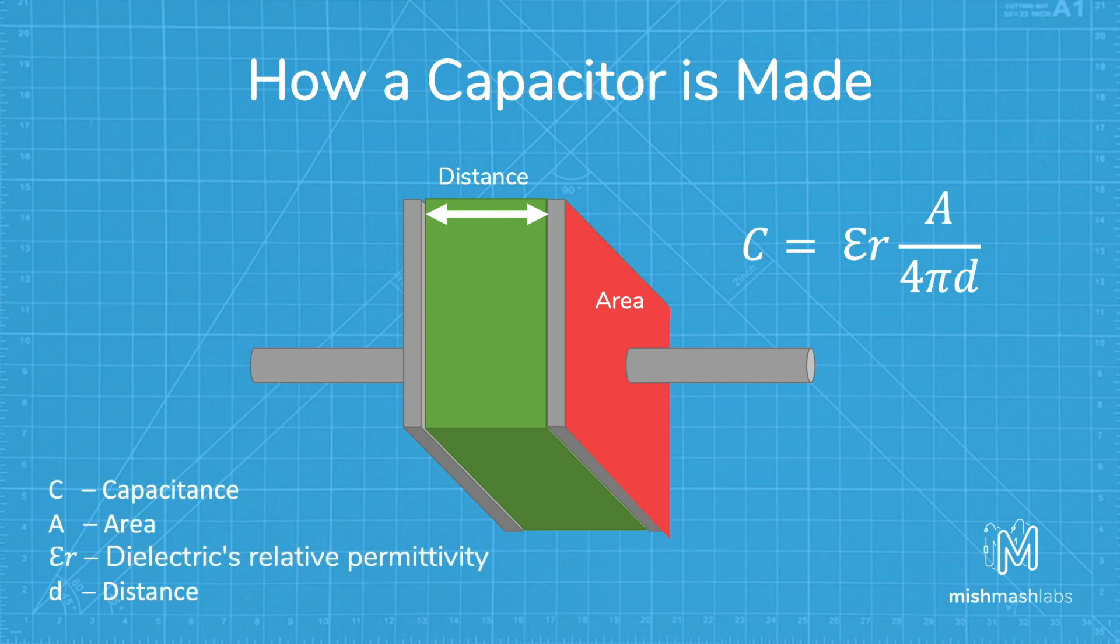More surface area provides more capacitance, while more distance between the plates provides less capacitance. The dielectric's relative permittivity will depend on which material you use for the dielectric, and this will have an effect on the capacitance also.